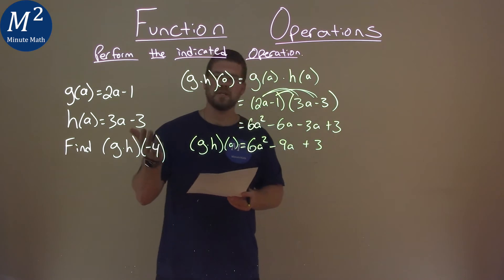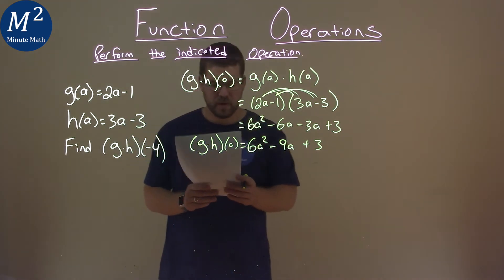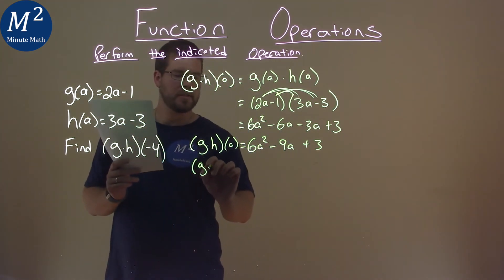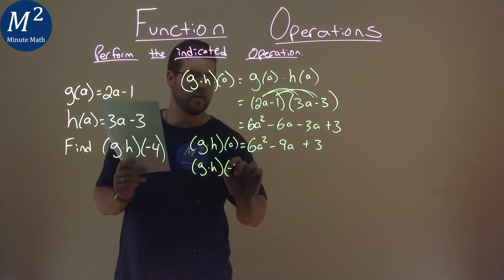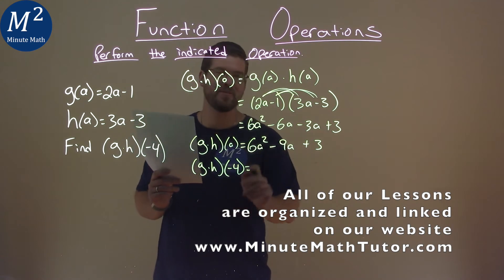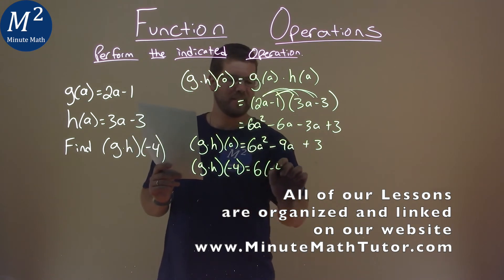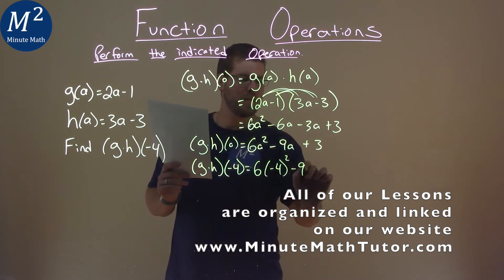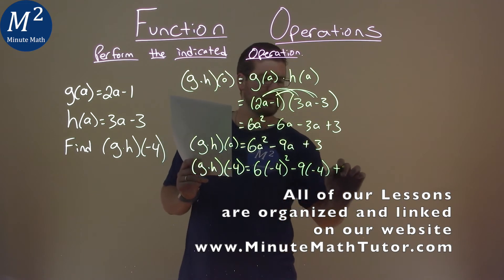But they ask us to find g times h of negative 4. So what we do is take our g times h, and instead of a, we put negative 4 in. And now we simplify, or we substitute negative 4 in for a: 6 times negative 4 squared minus 9 times negative 4 plus 3.